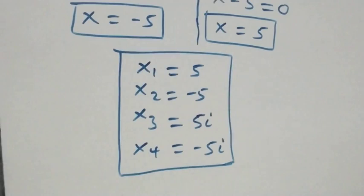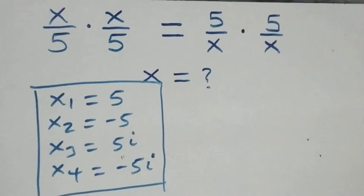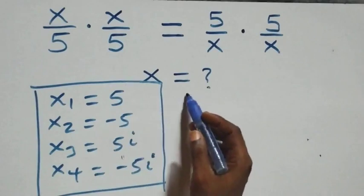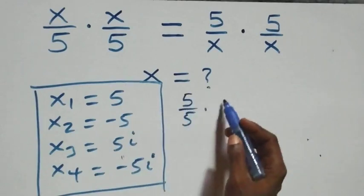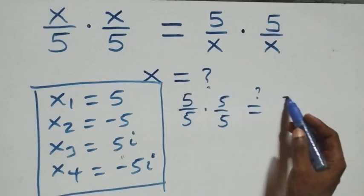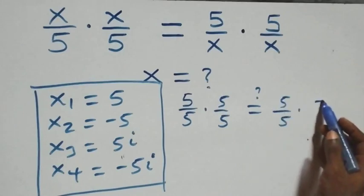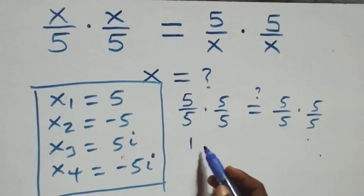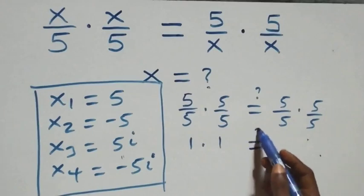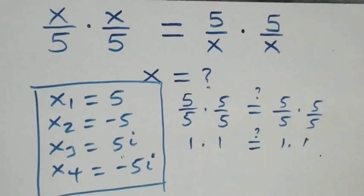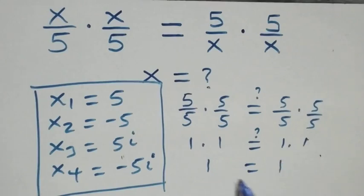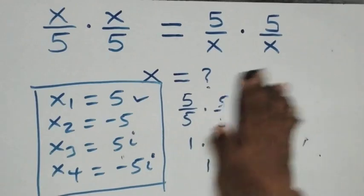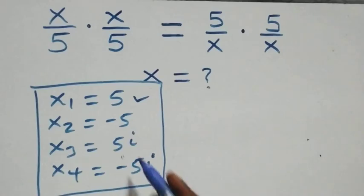Now let's check if these satisfy the given problem. We substitute x equals 5: (5/5) times (5/5) equals (5/5) times (5/5). Here 5/5 is 1, times 1 equals 1, and on the right side 1 times 1 is also 1. Left hand side equals right hand side, so x equals 5 satisfies the given problem.